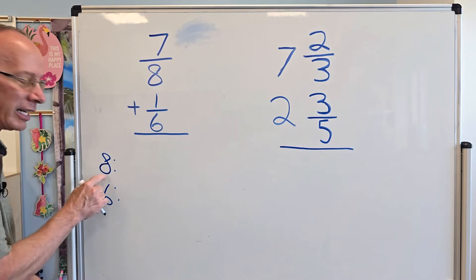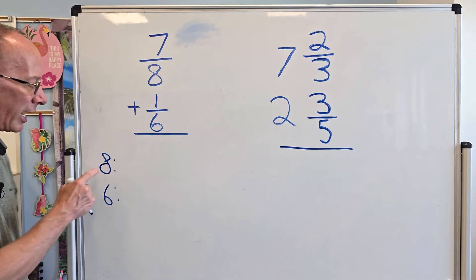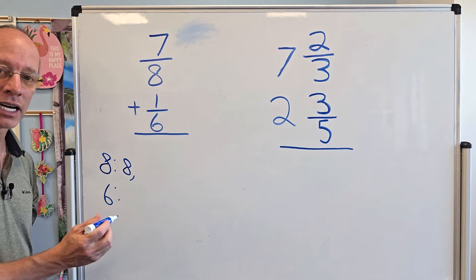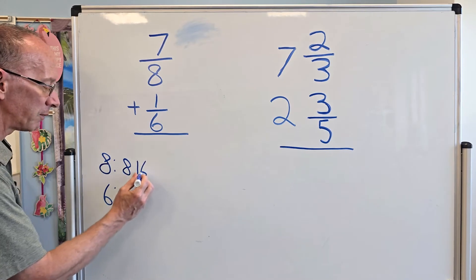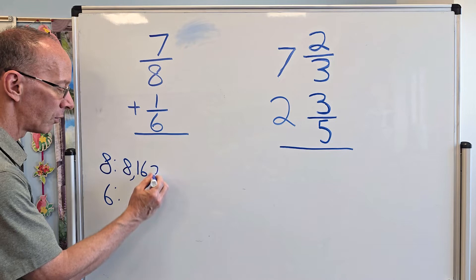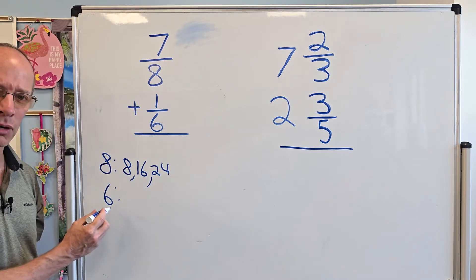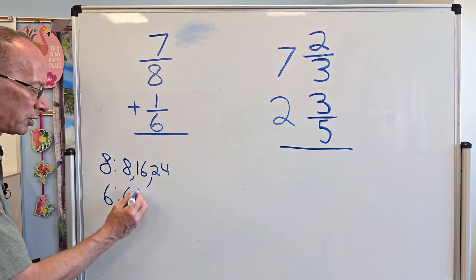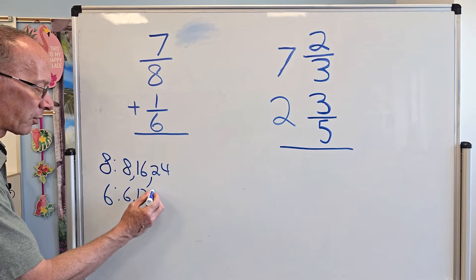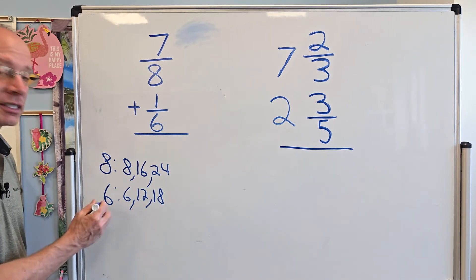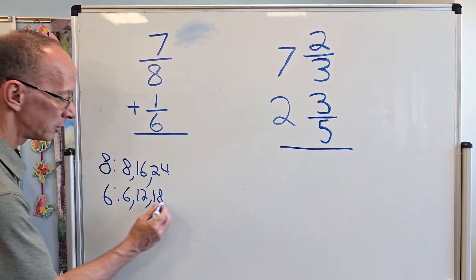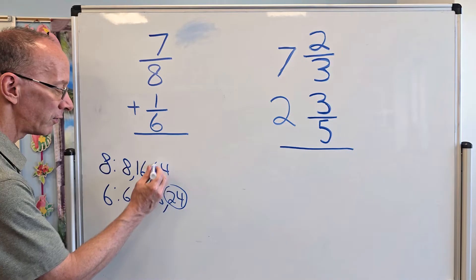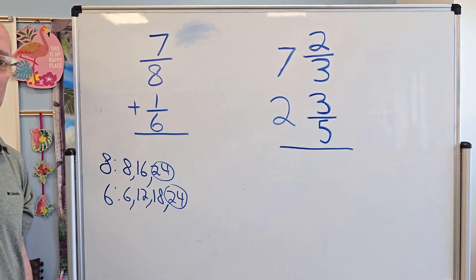So I write down 8 right here and 6 right here. And I'm going to go ahead and start just doing multiples of 8. So 8 times 1 is 8. 8 times 2, 16. 8 times 3, 24. Let's do multiples of 6 right now. 6 times 1 is 6. 6 times 2 is 12. 6 times 3 is 18. And then 6 times 4, you got it. 24.